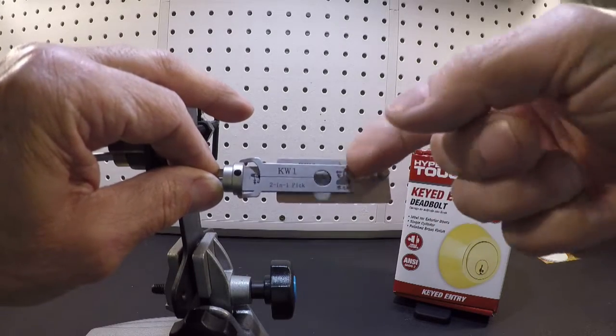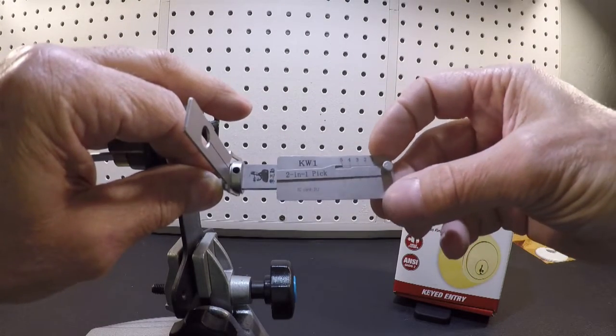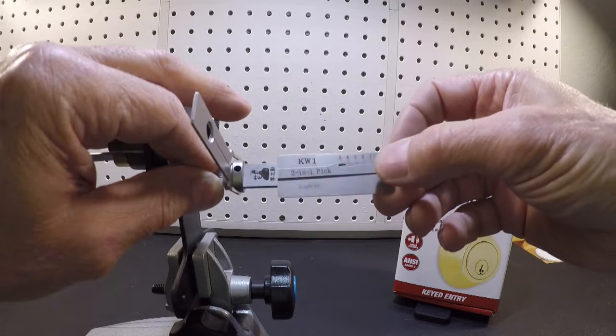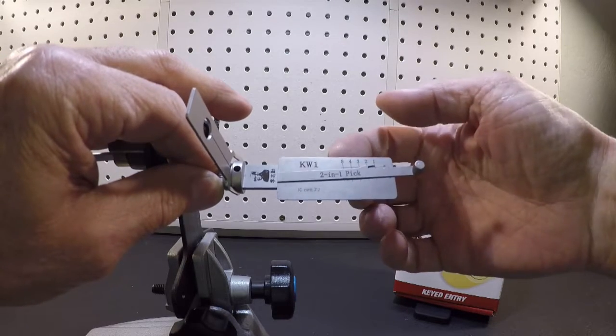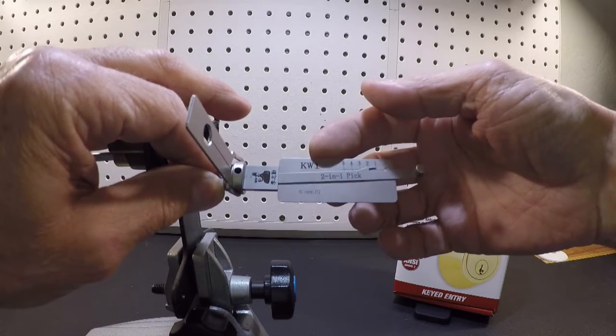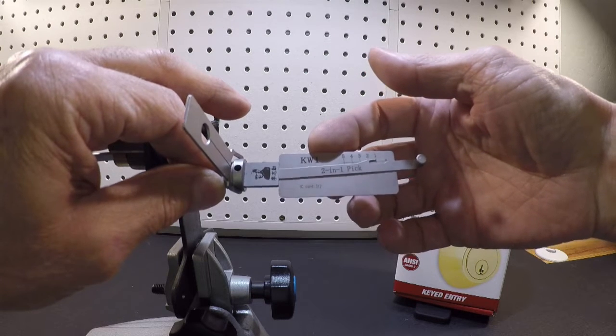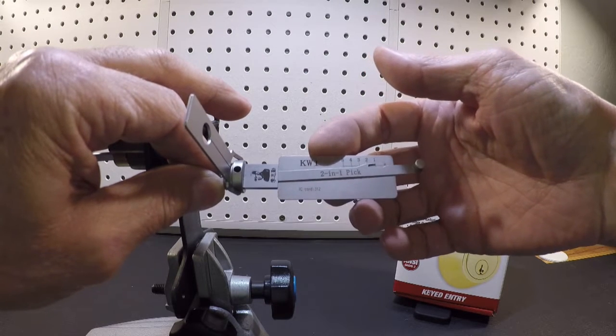This particular design is very similar to the automotive pick with a single lifter, but this one is for a KW1 residential and in some cases commercial application lock.